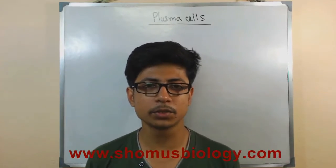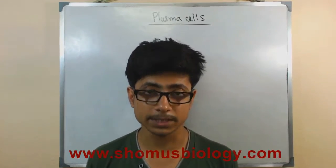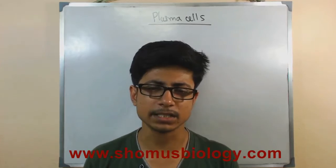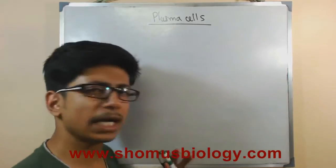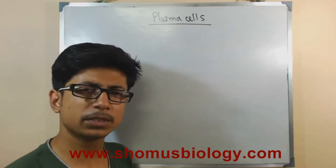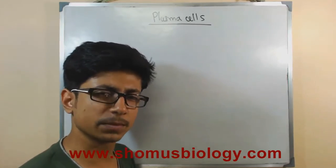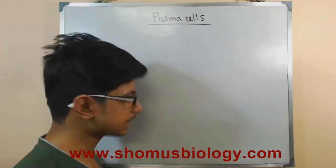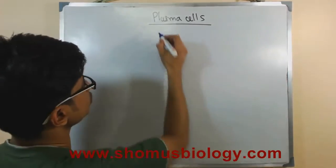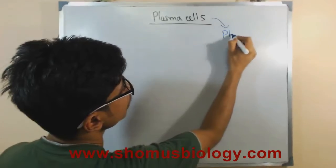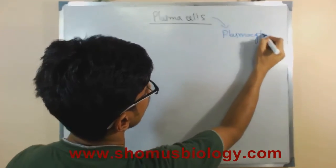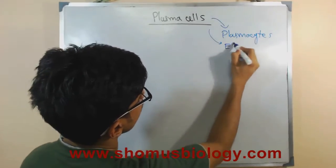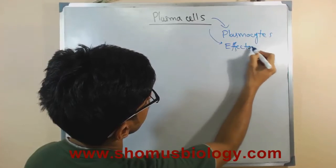Welcome again guys. In this video tutorial we'll be talking about plasma cells. I have done many videos about immunology and different cells like T cells and B cells and how they interact with each other. Plasma cells are among that part mainly, but we'll be talking specially about the important properties of plasma cells. Plasma cells have many other names — they are also known as plasmacytes, and also known as effector B cells.